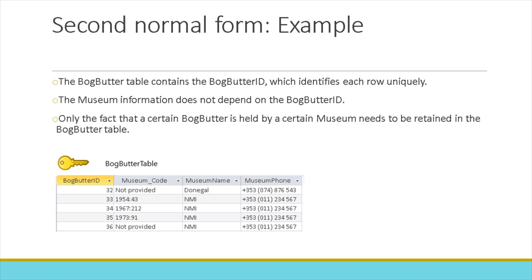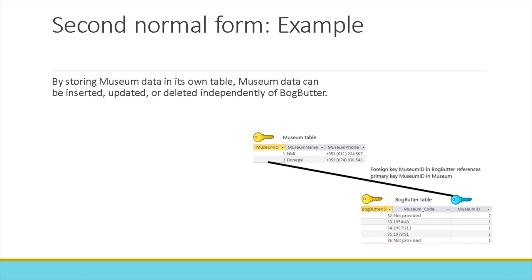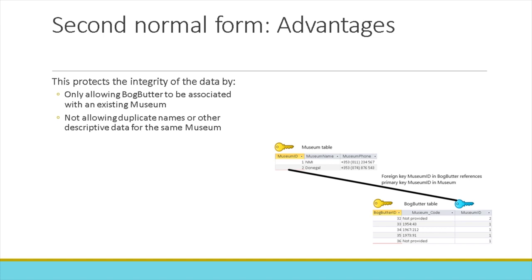Before the bog-butter table has been put in second normal form, no museum without a bog-butter can be added — which is an insert anomaly. Updating museum data in one row wouldn't update it in the others — which is an update anomaly. And deleting a bog-butter row would delete museum data — a delete anomaly. By storing the museum data in its own table and relating it back to the bog-butter table through a primary key–foreign key relationship, museum data can be inserted, updated, or deleted independently of the bog-butters. Second normal form also protects data integrity by only allowing bog-butter to be associated with an existing museum and not allowing duplicate descriptive data for the same museum.